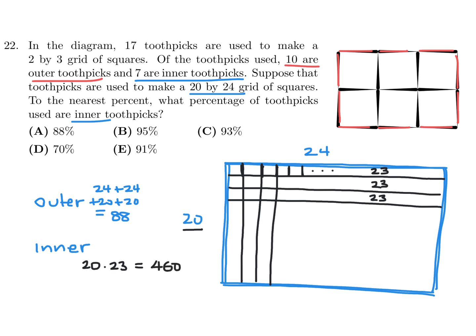Now we have to figure out how many are horizontal. If it's going all the way across, I think it's 24 — so there'll be 24 horizontal toothpicks per row. But then we've got a whole bunch of rows. How many of those rows? Be careful — only 19, because we're not going to count the top one and we're not going to count the bottom one. So 24 times 19 is 456. So the total inner is 460 plus 456, which is 916.